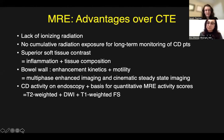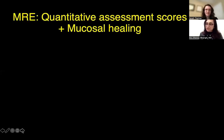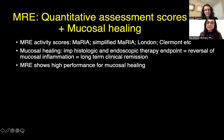Disease activity as assessed on MR enterography has been correlated with disease activity on endoscopy, and this is the basis for quantitative MR enterography activity scores. In general, MRE is better than CTE for detection of fibrosis; however, accuracy as compared to pathology is still being established. To decrease reader subjectivity and enable objective quantitative assessment of Crohn disease activity, several validated MRE activity scores have been developed, which are currently in use in clinical trials of new Crohn disease therapeutic agents.